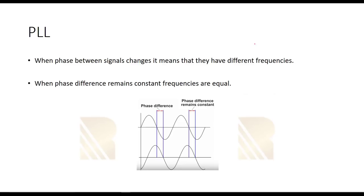Before starting the structure, we have to mention an important concept. Imagine we have two signals — one with frequency f1 and another with f2 — and we want to see if they have the same frequency or not. The test is: when the phase between signals changes, it means they have different frequencies; when the phase difference remains constant, it means the frequencies are equal. We just have to check the phase difference multiple times. As you see in this picture, the phase difference is constant, which means these two waves have the same frequency — f1 equals f2.